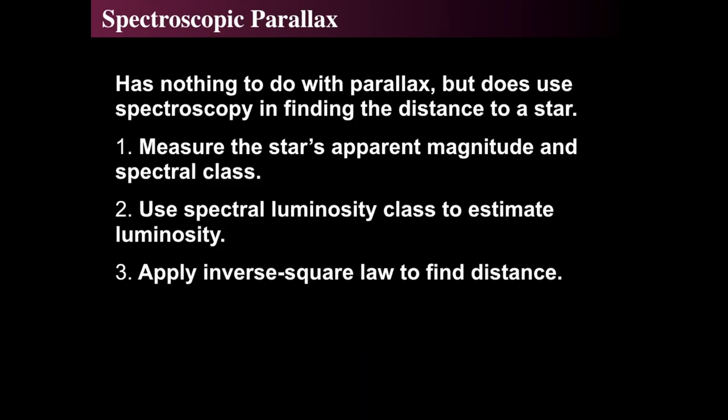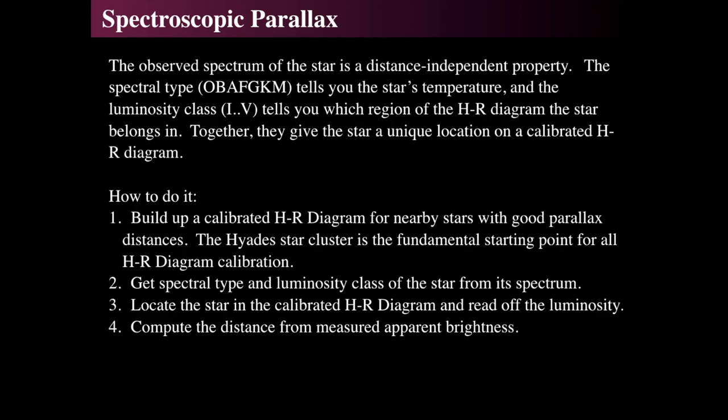If you can get a group of stars that happen to be at the same distance, they may have a distinct main sequence, and that is called spectroscopic parallax. It doesn't really have a lot to do with geometric parallax, but it actually uses spectroscopy to find the distance. What we do is measure the apparent magnitude, or apparent brightness, of a star and its spectral class or its color. You can find the luminosity class, but to get that you do need the spectrum, unless it's in a cluster. Then you can apply the inverse square law to find the exact distance, or you can use the distance modulus equation.